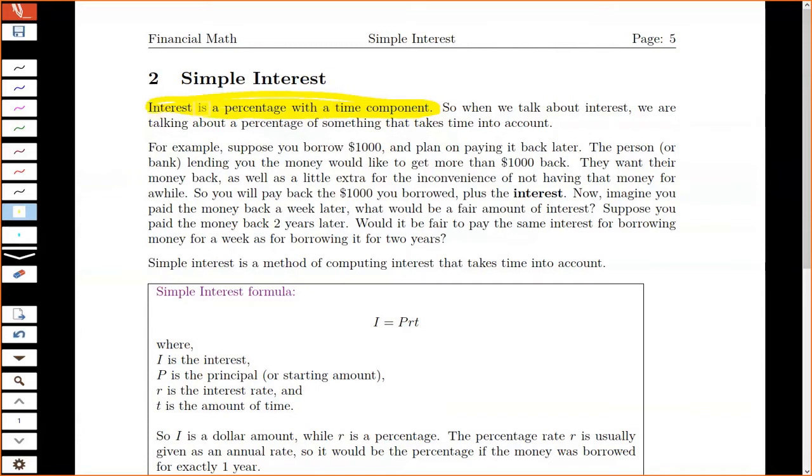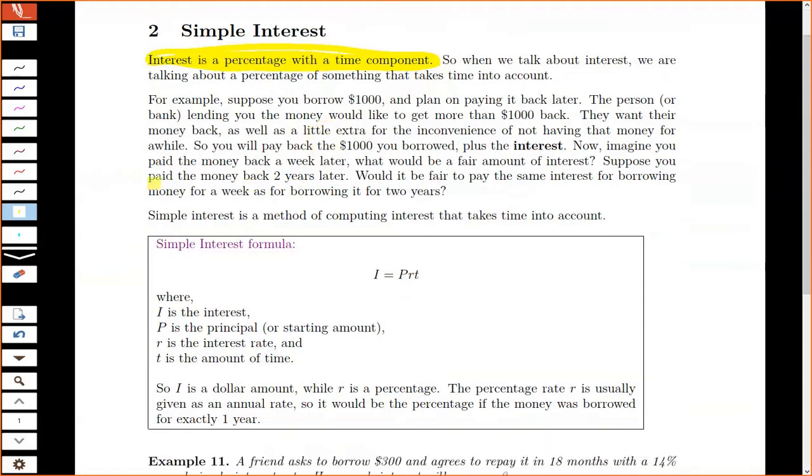So what we're going to do when we look at interest is figure out how much of the interest we're going to charge. And so what we do is when we take a percentage, we multiply and we'll just throw an extra factor in there for time. So here's our simple interest formula: I equals PRT.